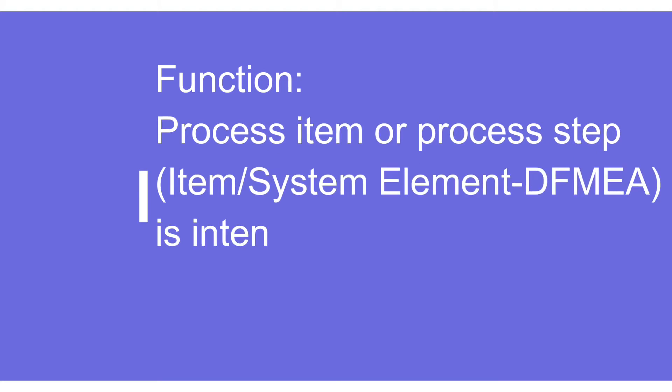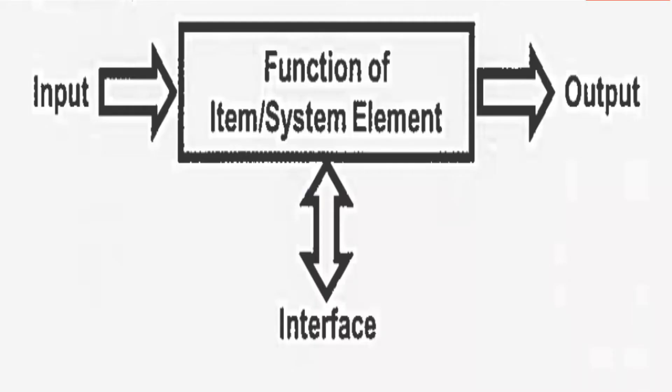When we say function, it means what exactly we are intending to do — whether with respect to PFMEA or DFMEA. Primarily it is about input and output, and we are trying to understand the relationship between input and output by understanding what is happening in between. As you can see in the picture, whatever inputs and outputs are present will all depend upon what is happening in the system and what kind of interfaces it is going through.